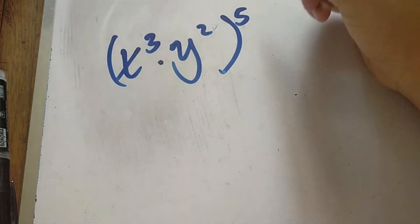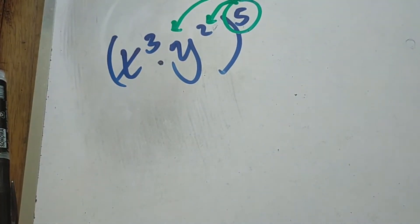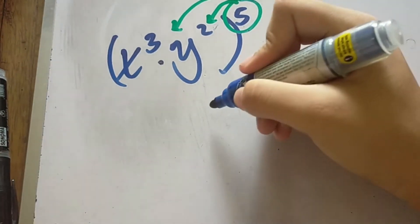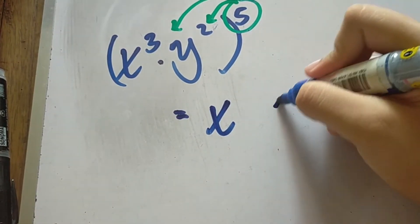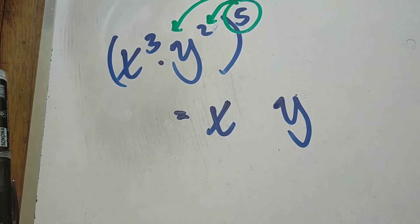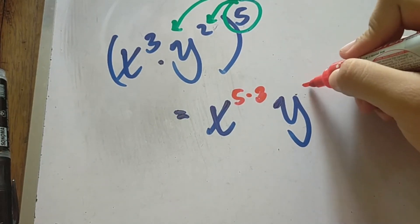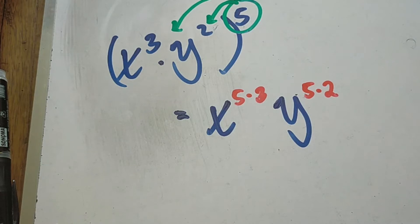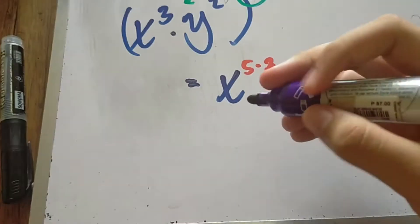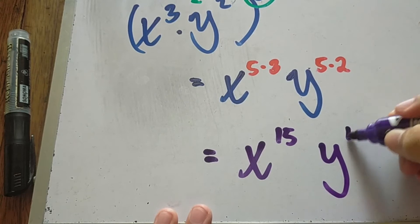To simplify, all we need to do is distribute the exponent 5 to each of the exponents using the Power Rule — we just multiply the exponent 5 to all present exponents. We copy the bases x and y, then multiply: 5 times 3 and 5 times 2. Simplifying, we get x raised to 15 and y raised to 10, and that is the final answer.